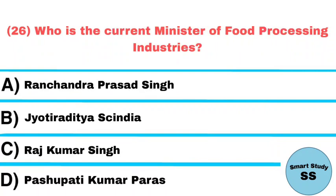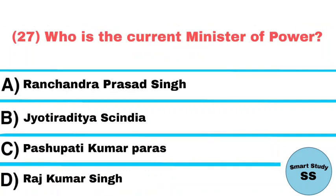Question number 26: Who is the current minister of Food Processing Industries? Answer: Pashupati Kumar Paras. Question number 27: Who is the current minister of Power? Answer: Ramchandra Prasad Singh.